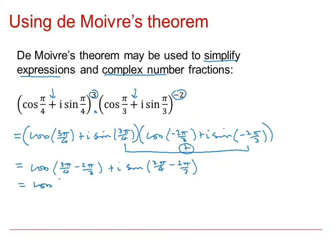So simplifying those angles, this simplifies to pi by 12, cos pi by 12 plus i sine pi by 12.